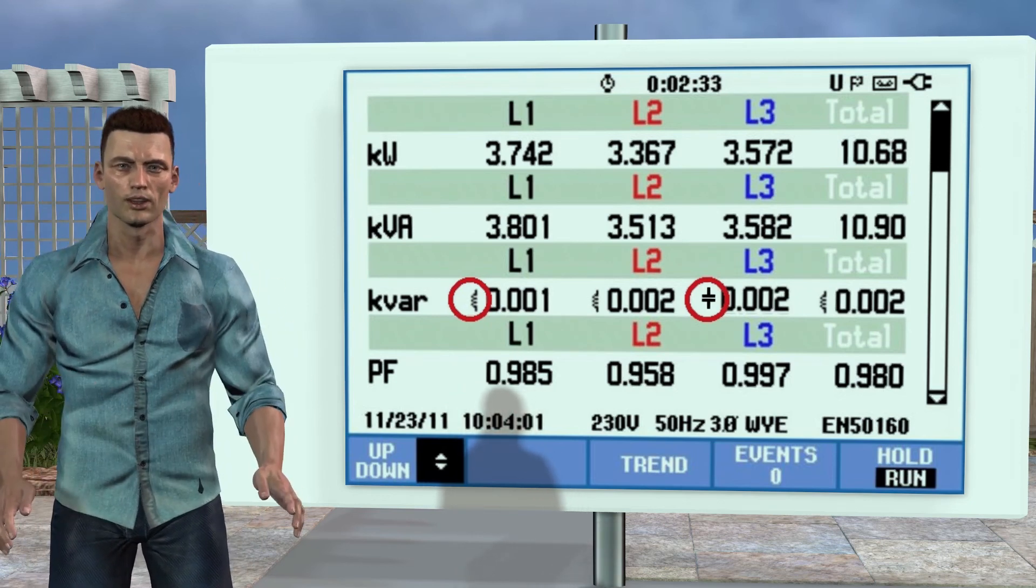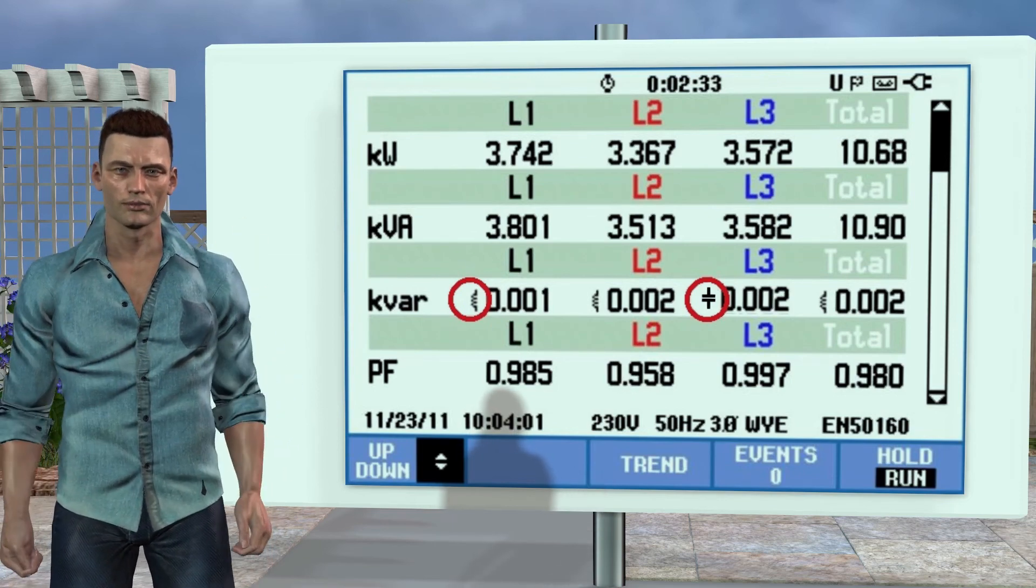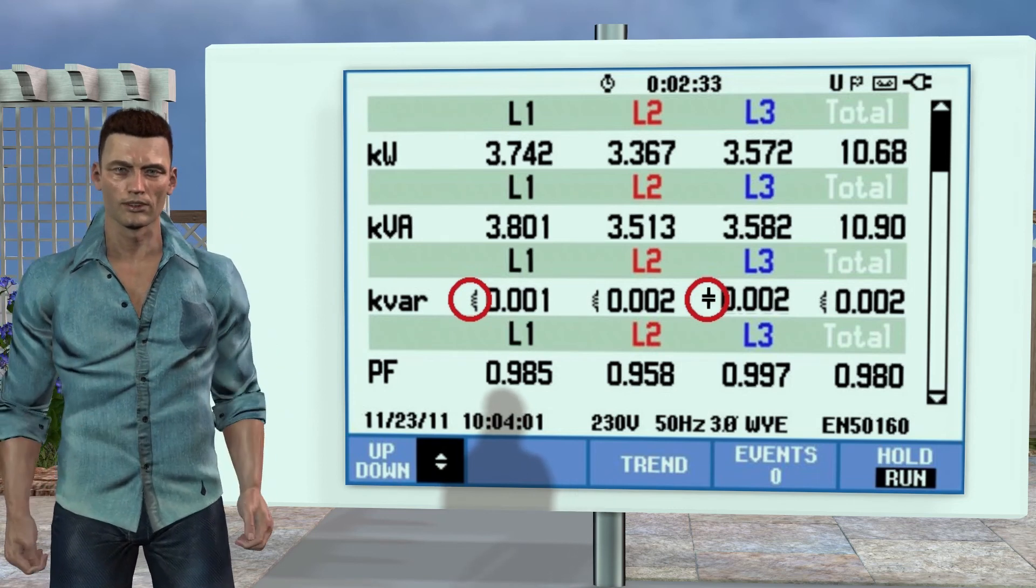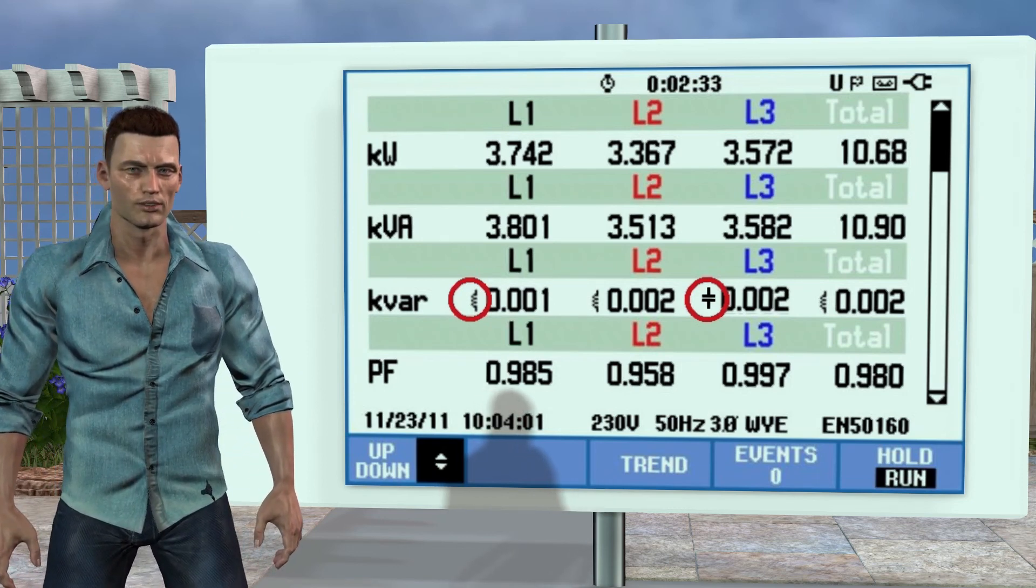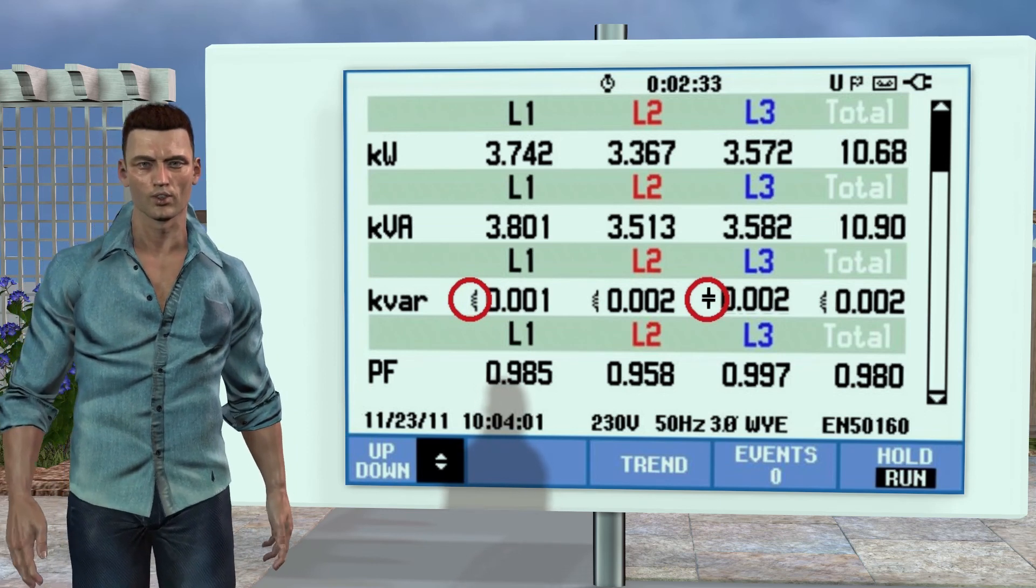Since we cannot arithmetically add active power with reactive power, or apparent power, each one, is expressed in different units. Active power is measured in watts or kilowatts, apparent power in volt amps or kilovolt amps, and reactive power in reactive volt amps or reactive kilovolt amps.